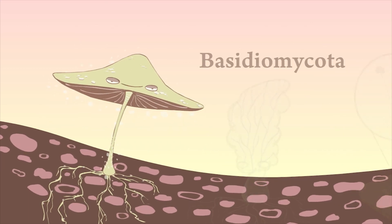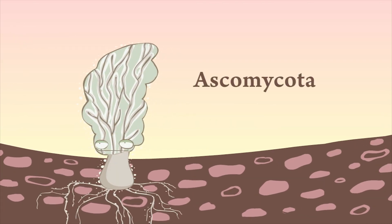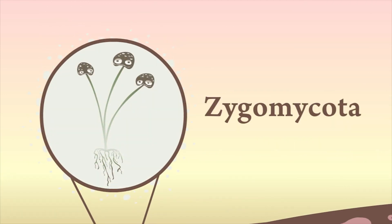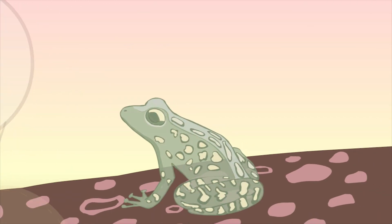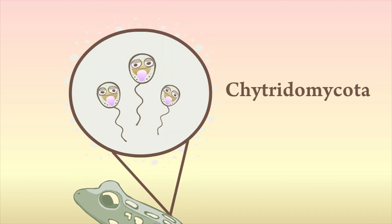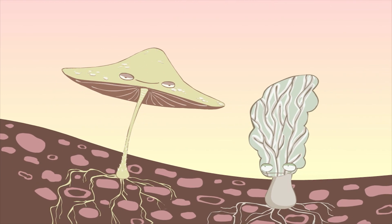The first are the basidiomycota, the club fungi — they're what most people think of when they think mushrooms. Then we have the ascomycota, or the sac fungi — they include the morels and truffles. On bread you'll often find bread molds like the zygomycota. Then in moist soil, or occasionally parasitizing frogs, you'll find the chytridiomycota. What you'll see in a forest on a stroll are usually the club fungi and sac fungi — the rest are just very small.